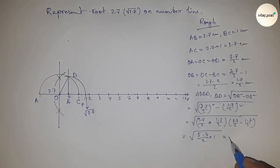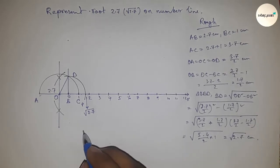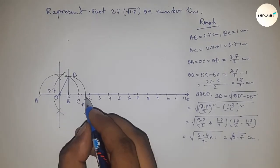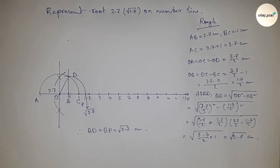This is root 2.7 centimeter. Therefore, distance BD and BP are equal, so BD equals BP equals root 2.7 centimeter. Thanks for watching. Please subscribe, like, and comment on my video.